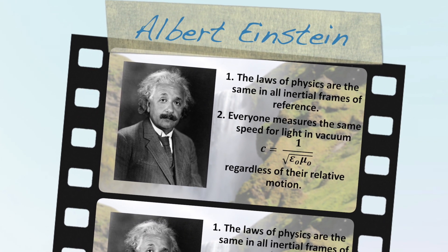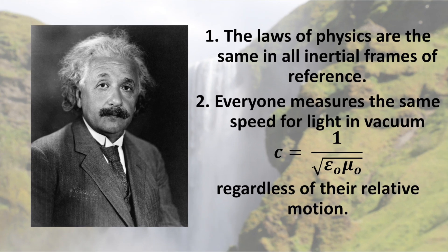In other words, what the community considered an explanandum — something that needed to be explained — Einstein posited as an explanans, the explanation. Here are the two postulates of special relativity. Postulate 1: the laws of physics are the same in all inertial frames of reference. Postulate 2: everyone measures the same speed for light in vacuum — c equals 1 over the square root of epsilon naught mu naught — regardless of their relative motion. These postulates represent an egalitarian model of physical reality. That is, no one's reference frame is preferred. As I explained in episode 1, this means my sense experiences cannot provide me with privileged access to the real external world, per Einstein.